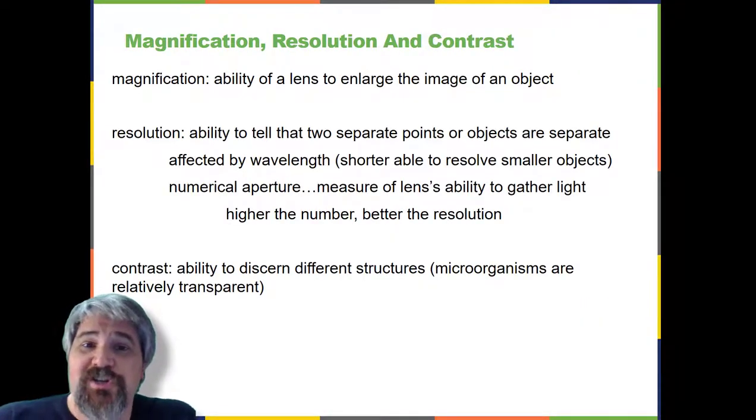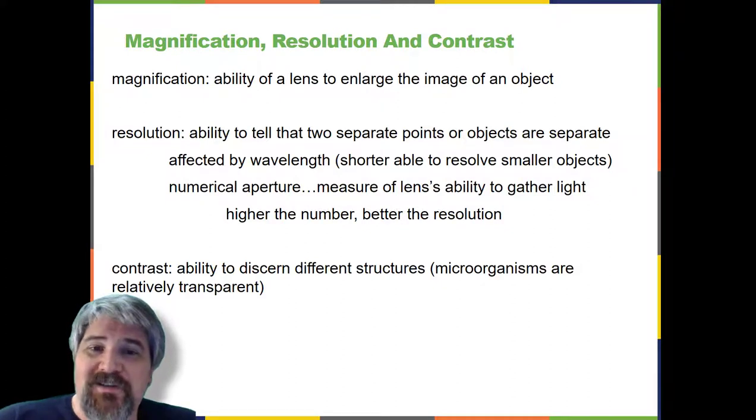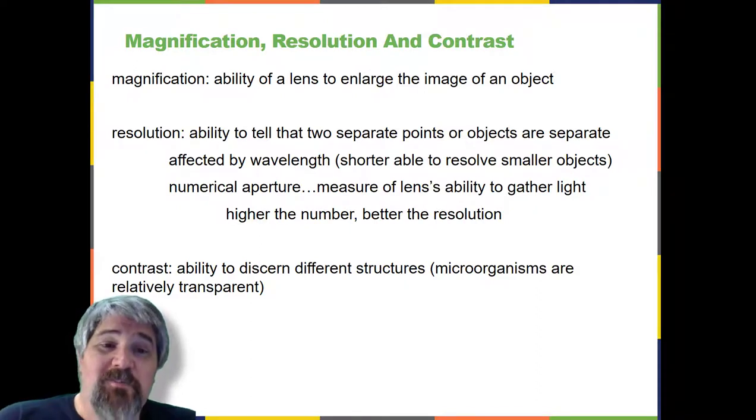Magnification, resolution, and contrast. Microscopes magnify images and use the properties of light to create useful images of small objects. Magnification is defined as the ability of a lens to enlarge the image of an object when compared to the real object. For example, a magnification of 10x means that the image appears ten times the size of the object as viewed with the naked eye.